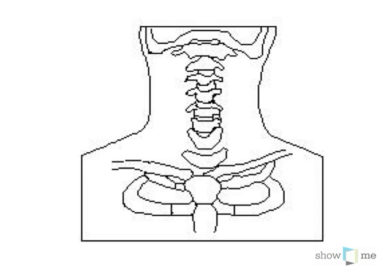The sternocleidomastoid muscle's name will pretty much tell you its origin and insertion. 'Sterno' because part of its origin is on the sternum. 'Cleido' because part of it is on the clavicle. 'Mastoid' because it inserts on the mastoid process. So: sternocleidomastoid muscle.